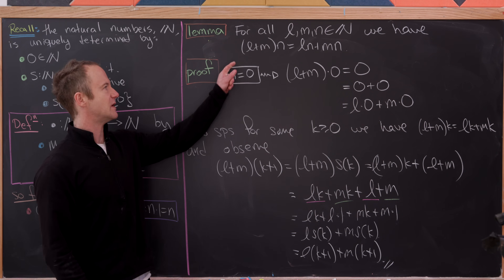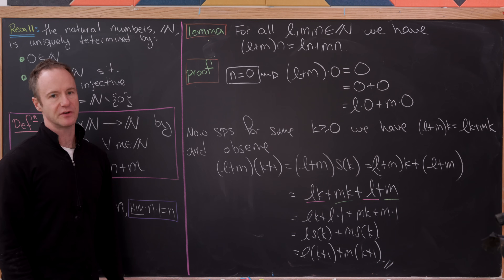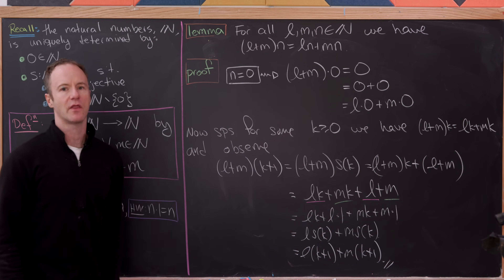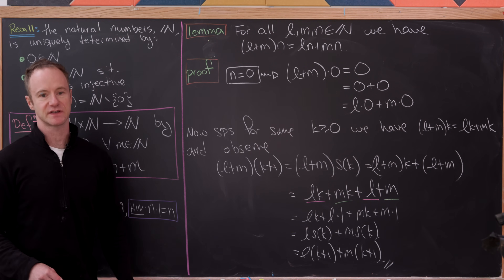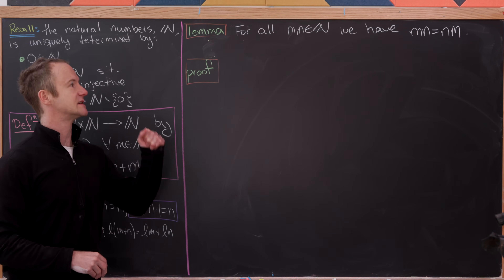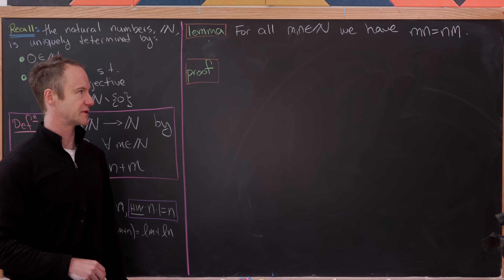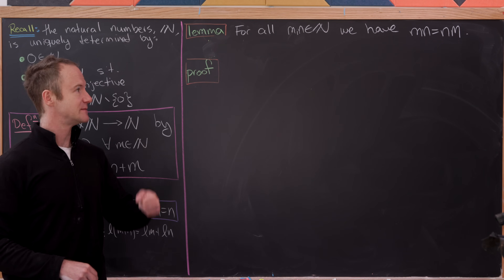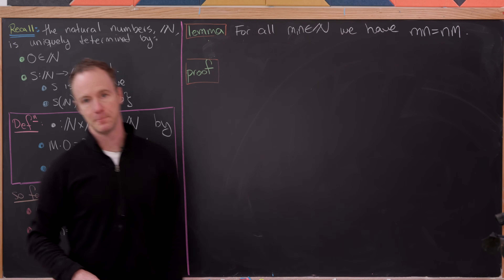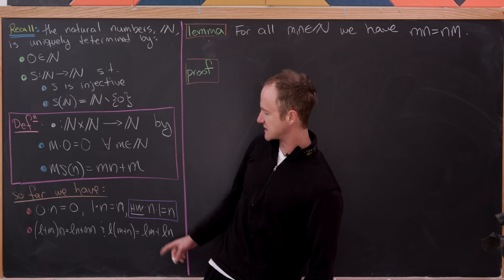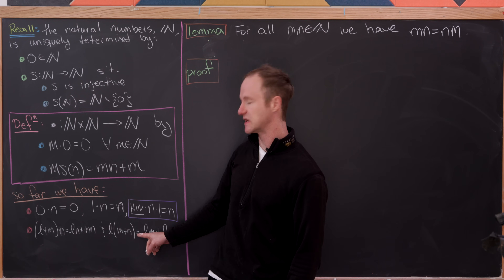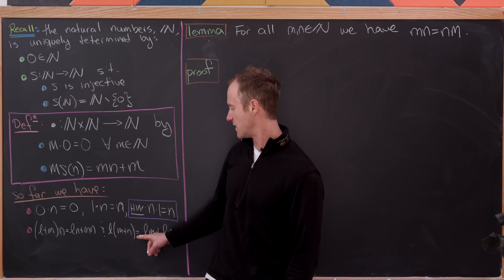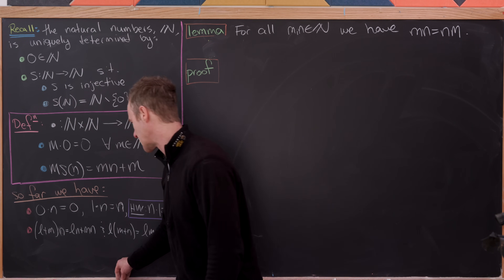This is one type of distributive rule — distributing from the left. The other type, putting the addition on the right, I'll leave as a homework exercise. Now we're getting into the commutativity of multiplication. In other words, for all natural numbers m and n, m times n equals n times m. We've got our previous results as a tool; I've included both types of distributive rule, though we may not need both here.